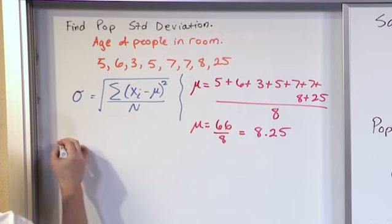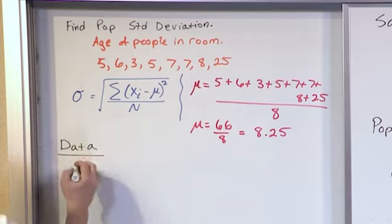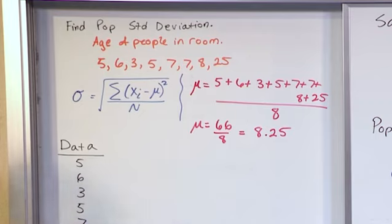So, the way you might see it done, the way it's convenient to do, is you might want to write your data down again. So, your data is 5, 6, 3, 5, 7, 7, 8, and 25. So, that's my data.